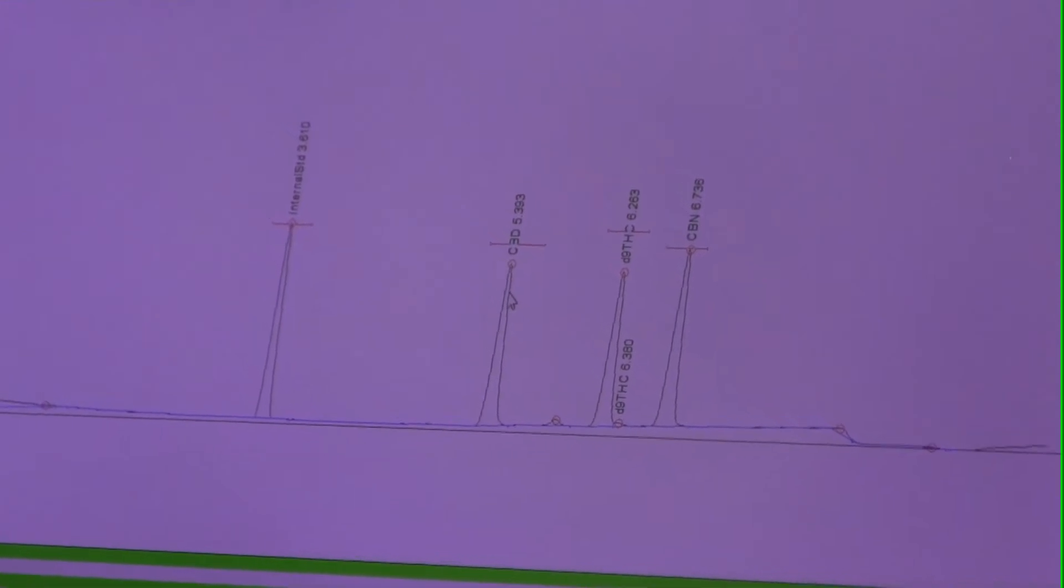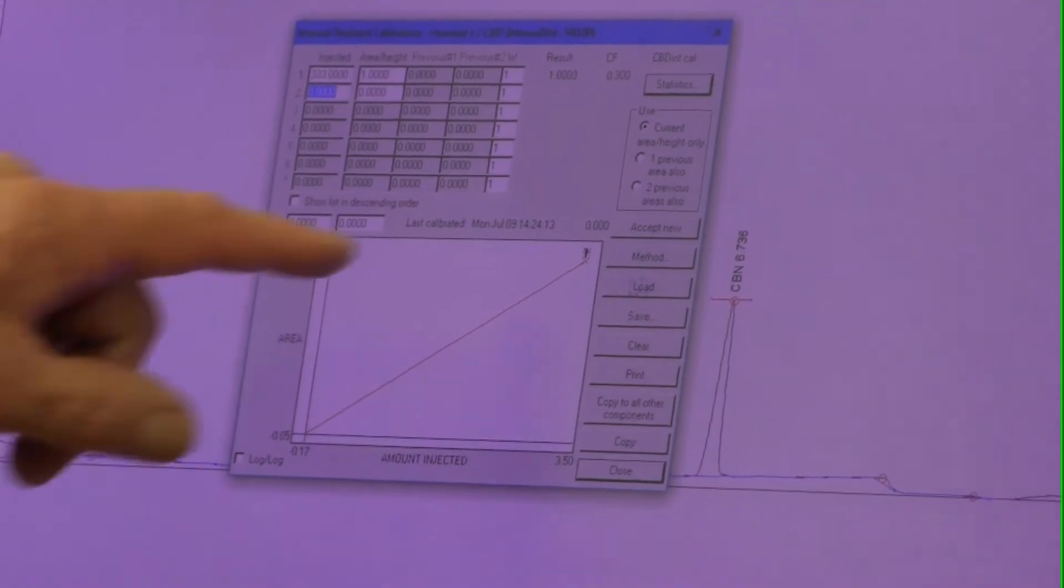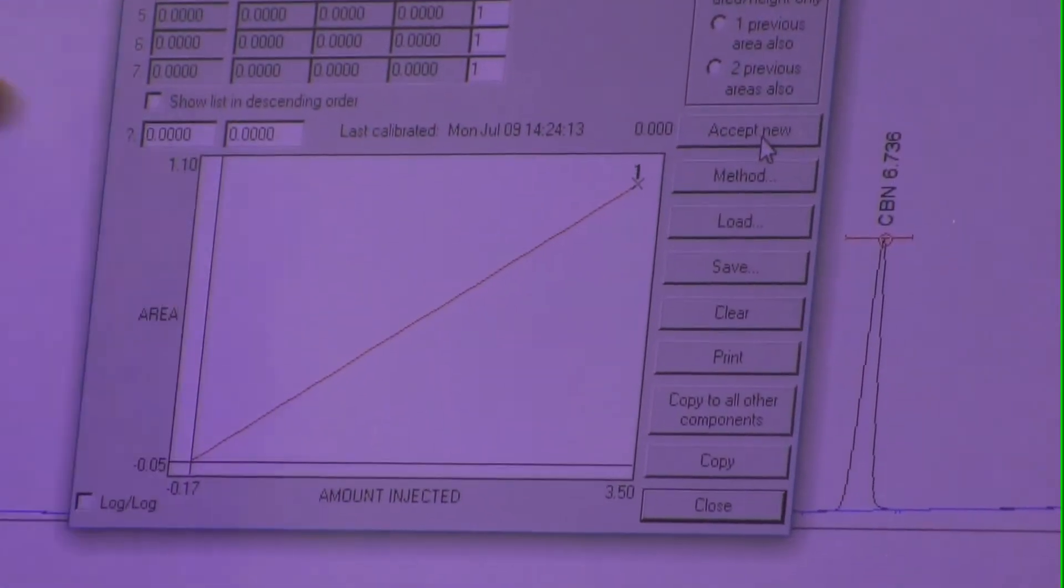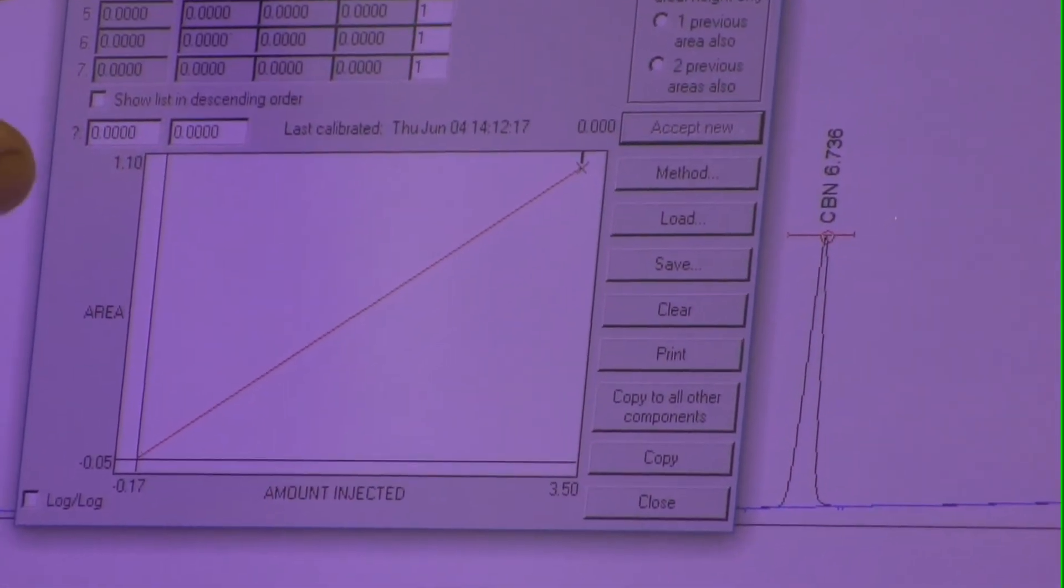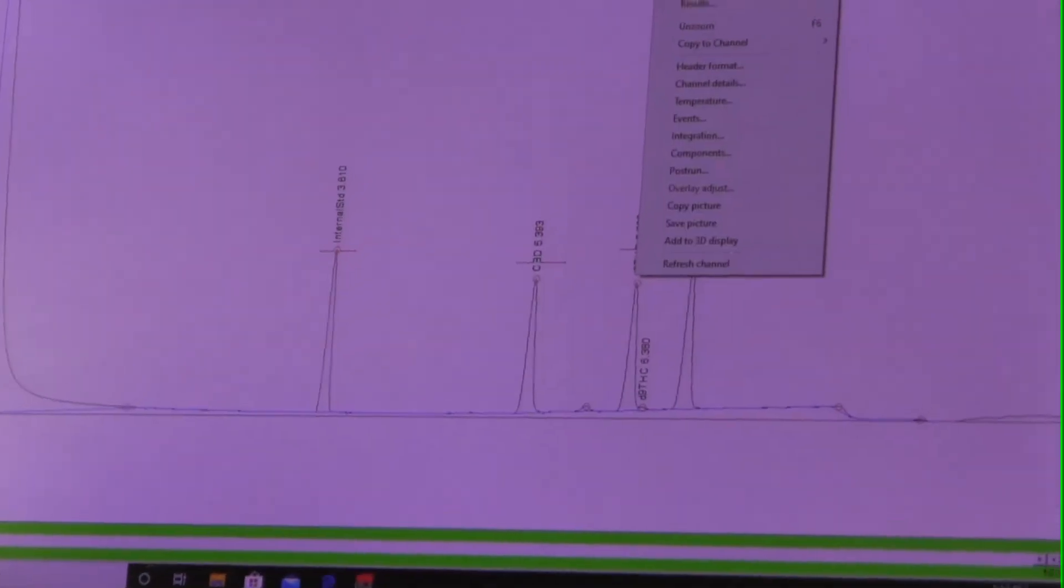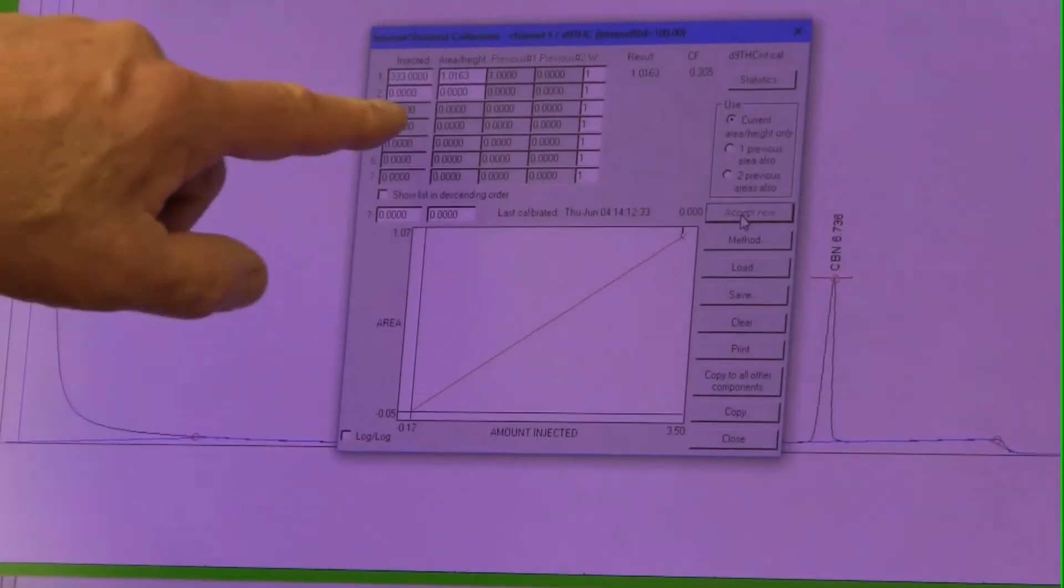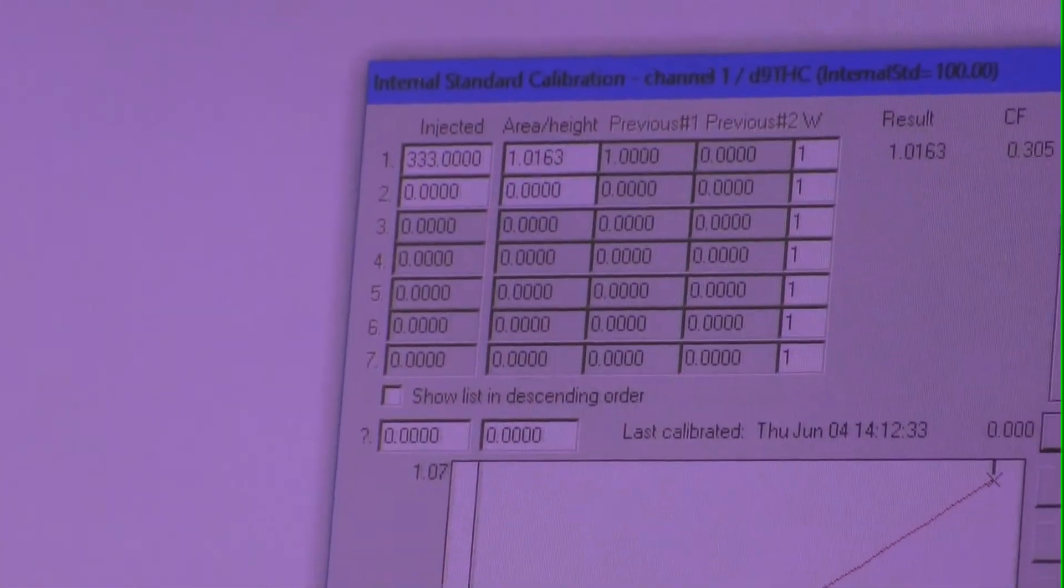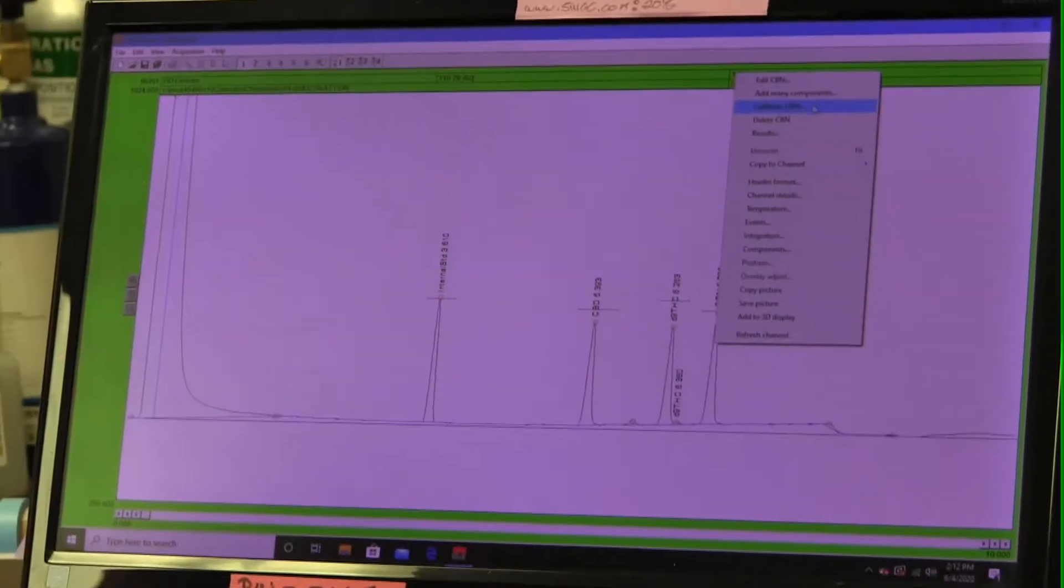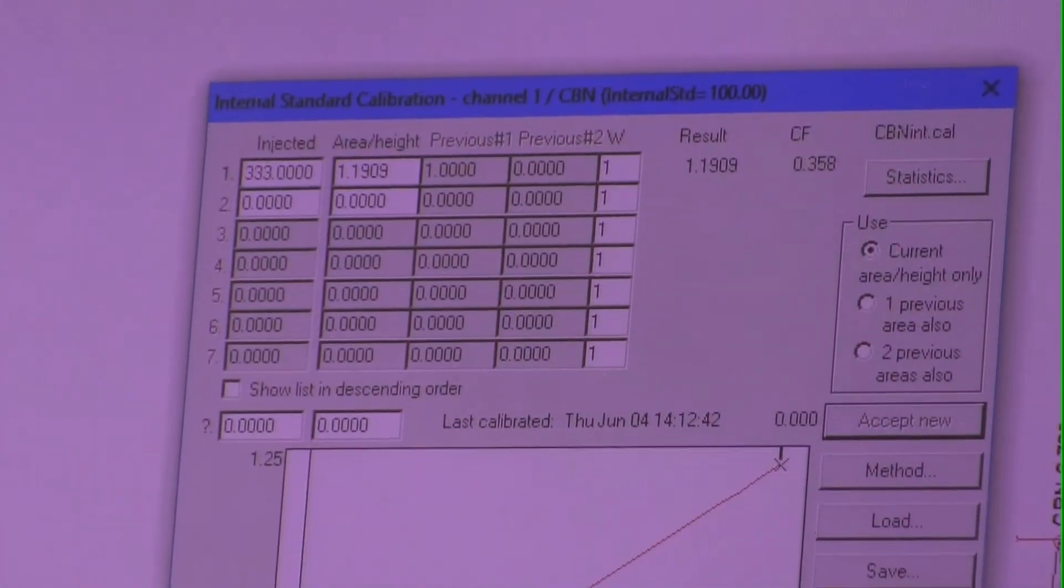Now what we do is we point to the CBD and we hit calibrate CBD, and then okay. And then there's a button here at the right called accept new. When we hit that button, there's a number that flows into this cell of the calibration spreadsheet. The number should be somewhere close to 1 if you've done everything correctly. And we do the same thing with the THC - THC, right-click, calibrate THC, okay, hit the accept new button, calculates a number, again very close to 1. And then finally with the CBN - calibrate CBN, hit accept new. It puts a number very close to 1 in there. And now we're calibrated.